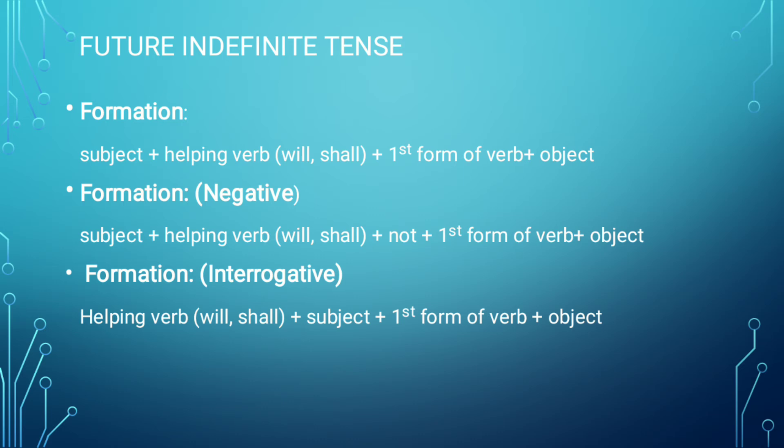Next: Formation — Interrogative ke liye. Sabse pehle helping verb aa jayega: will or shall. Will or shall sentence ke start mein sabse pehle aa jayega. Then subject, then first form of verb, then object. Jaise humne past indefinite padha tha, wahan par simple sentence mein second form of verb lagate the, baaki sab mein first. Yahan par aisa koi fark nahin hai — yahan par aapne har sentence mein first form of verb hi lagani hai.